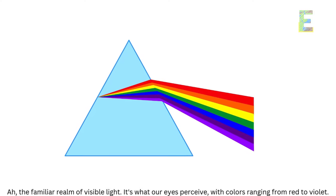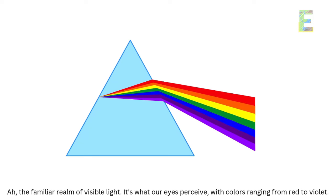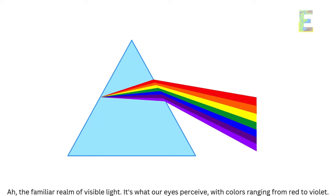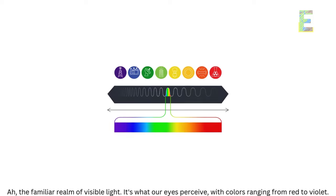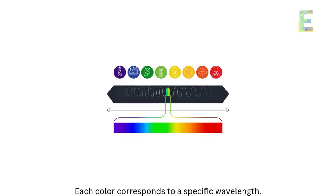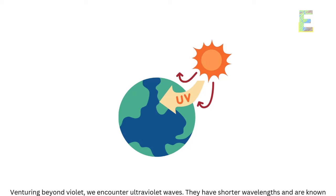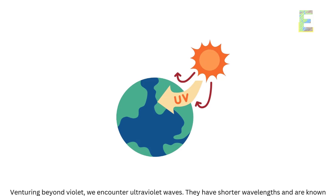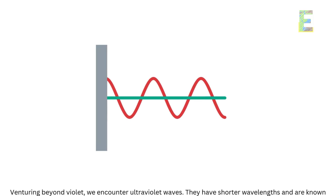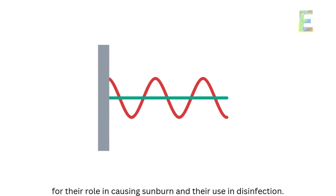Visible light — the familiar realm our eyes perceive, with colors ranging from red to violet. Each color corresponds to a specific wavelength. Venturing beyond violet, we encounter ultraviolet waves.